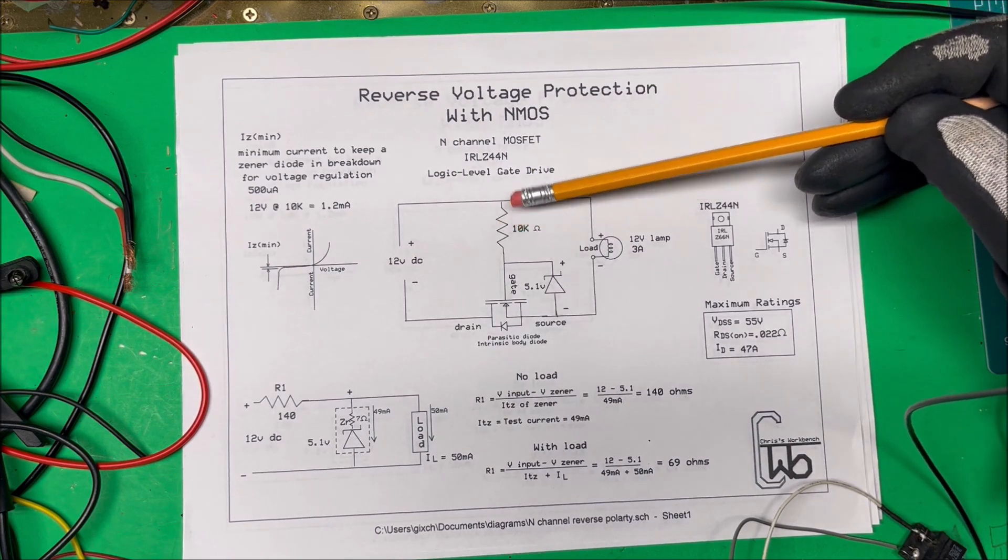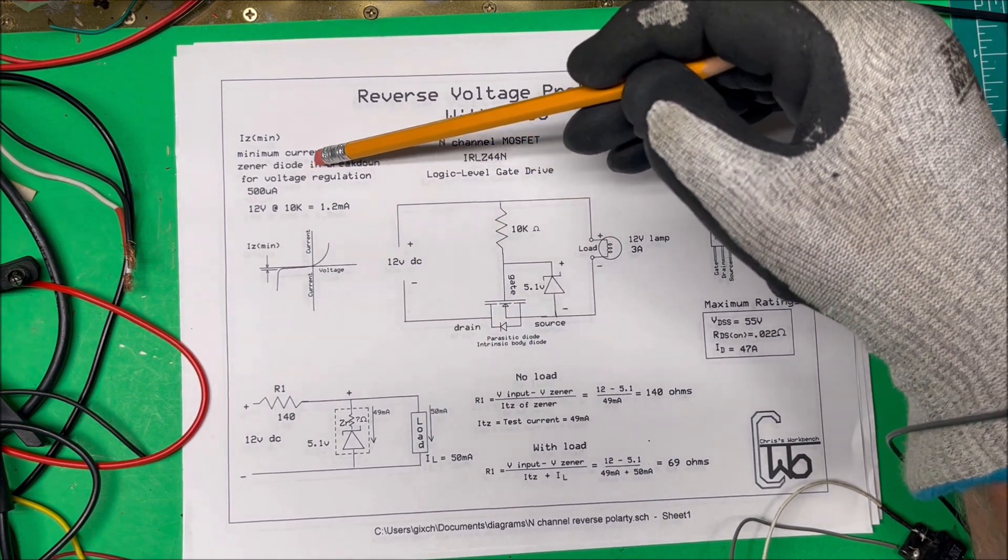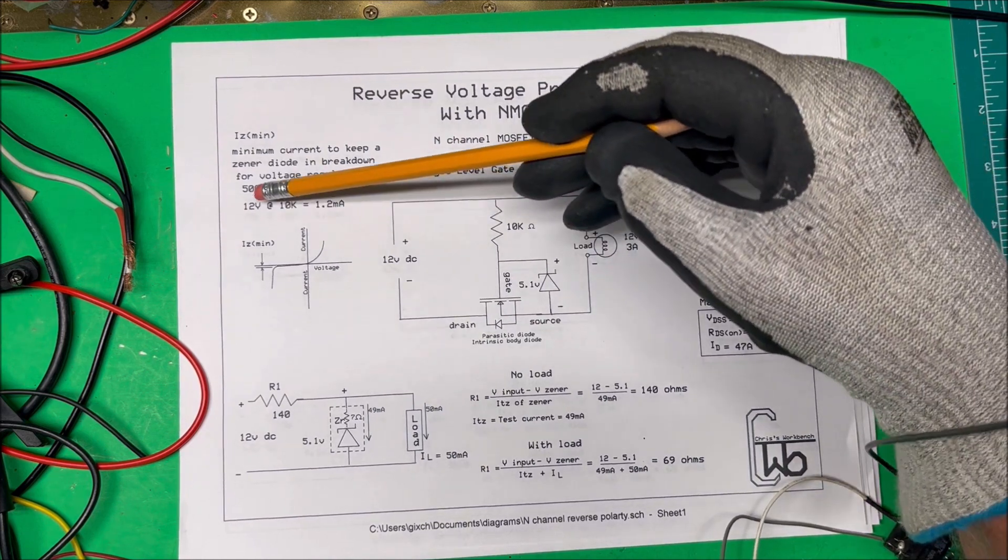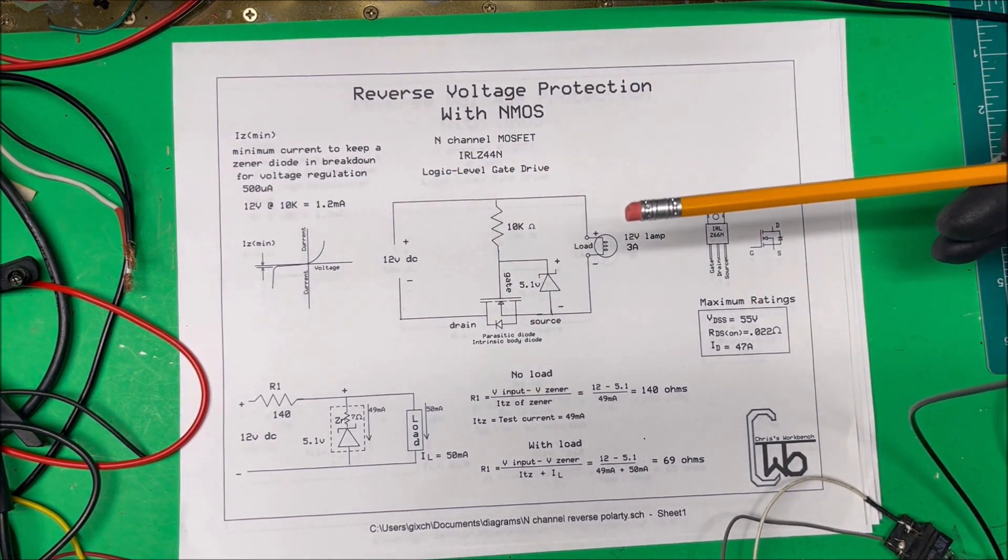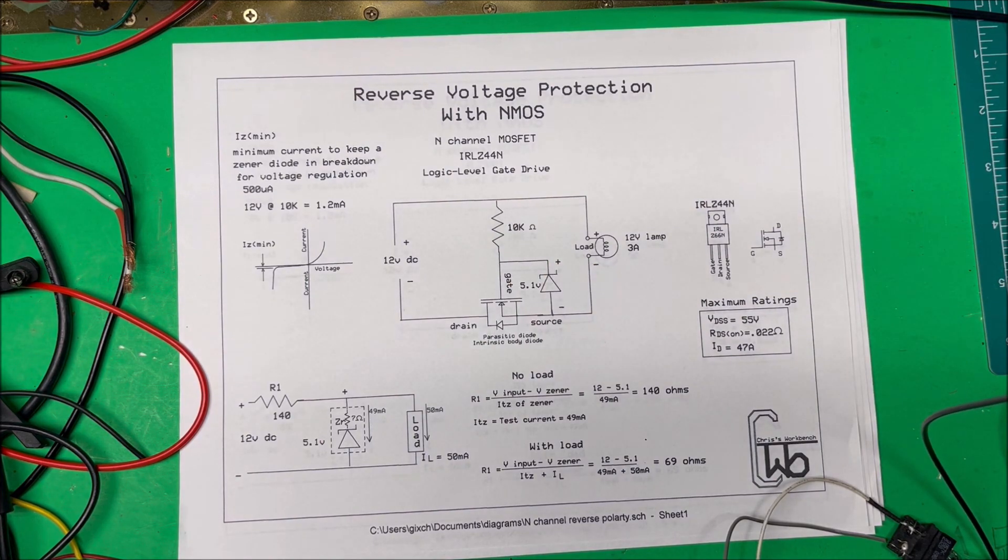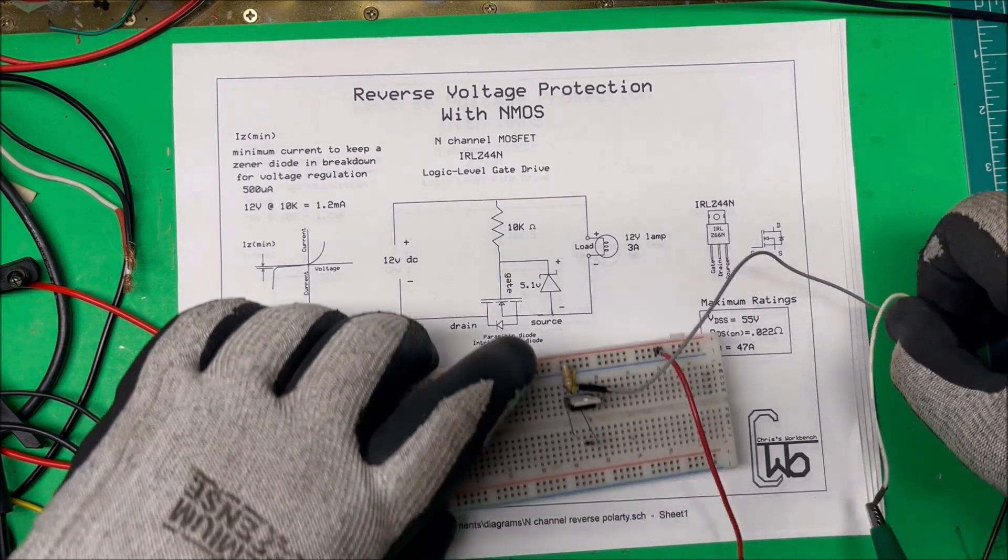So yeah so we can get by with our 10k because our minimum current to keep the Zener in breakdown is pretty low, you know half a milliamp or something. So that's how that's how it's going to work and I put it together here, here we go here.